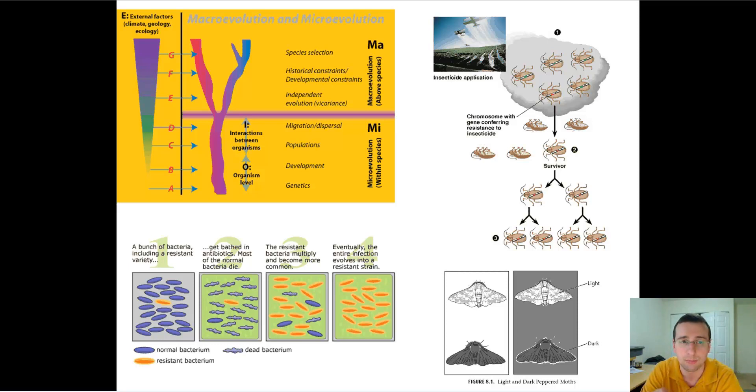That's by definition microevolution, which is different from macroevolution - the origin of new species from previous species. Microevolution is changing the population within the same species, while macroevolution is when groups get so different from each other that they can no longer interbreed and therefore are considered different species.